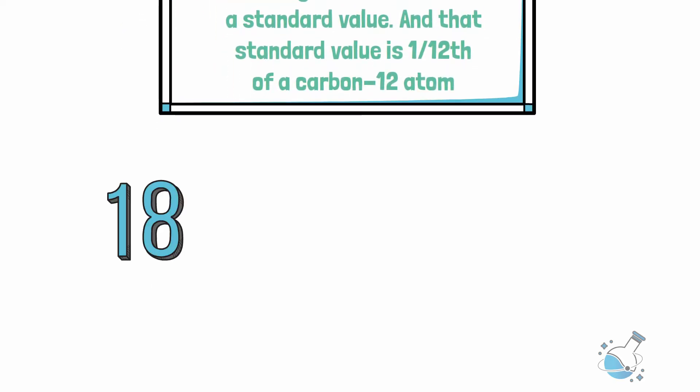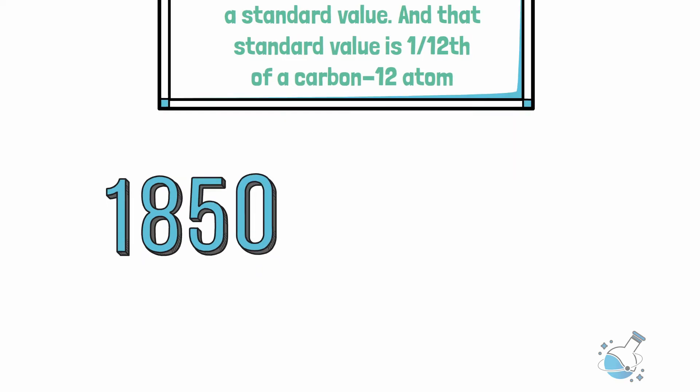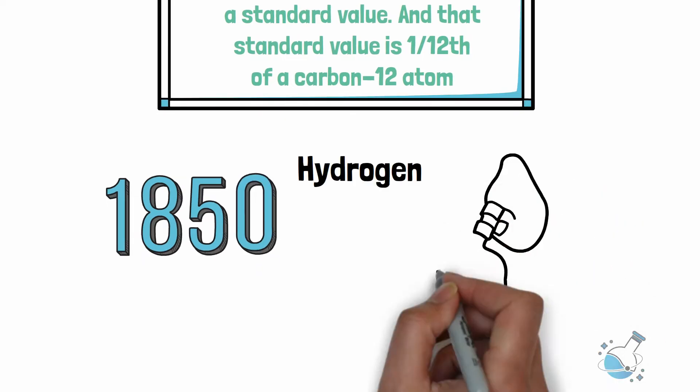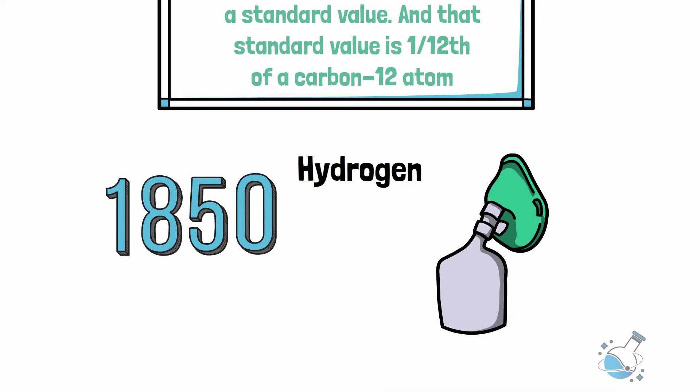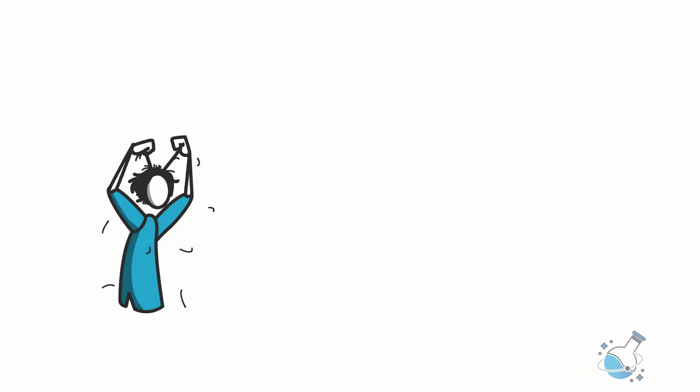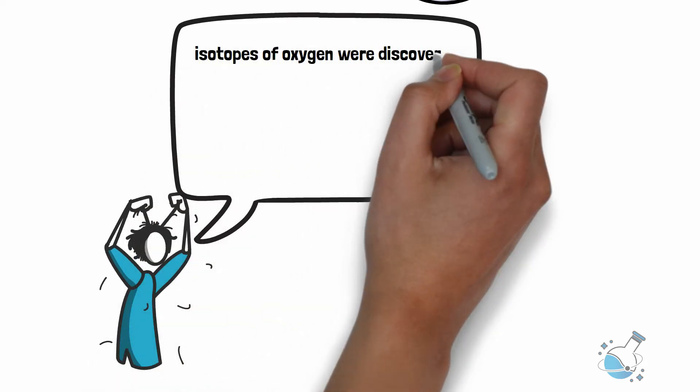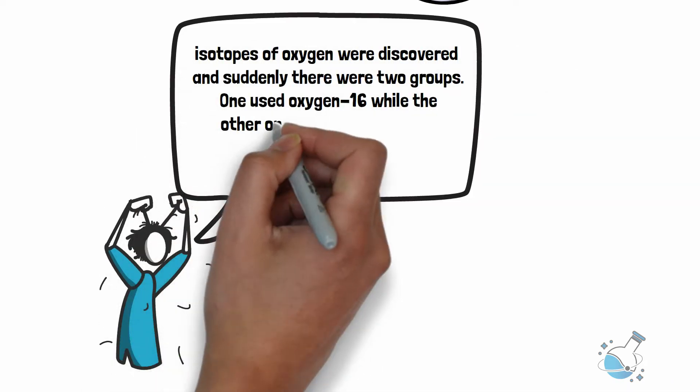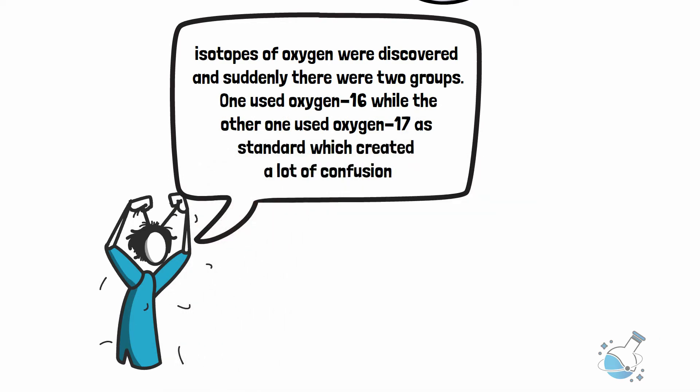At first, around 1850, hydrogen was used as the standard. But then scientists decided to use oxygen, as it reacted with so many compounds and was easily comparable. Things went awry when isotopes of oxygen were discovered, and suddenly there were two groups. One used oxygen-16 while the other used oxygen-17 as standard, which created a lot of confusion.